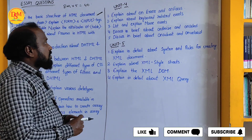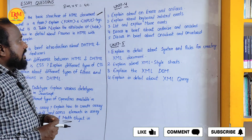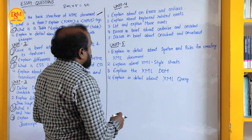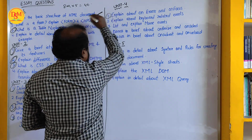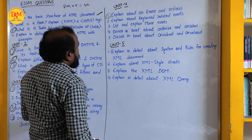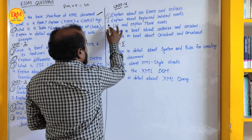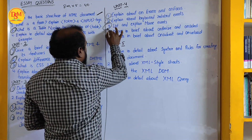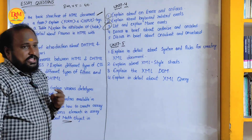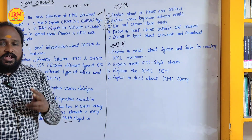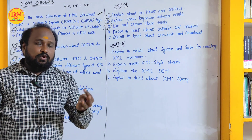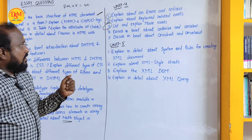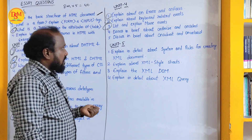For Unit 4: explain about the onError and onFocus events — very important. Also explain about keyboard-related events and mouse events. If either keyboard events or mouse events appear in the exam, one is enough. Learn both so you can choose — if the keyboard event question comes, answer that; if the mouse event comes, answer that.